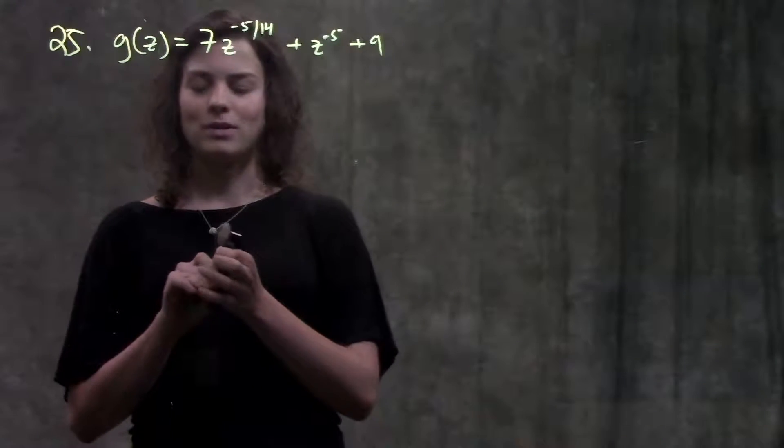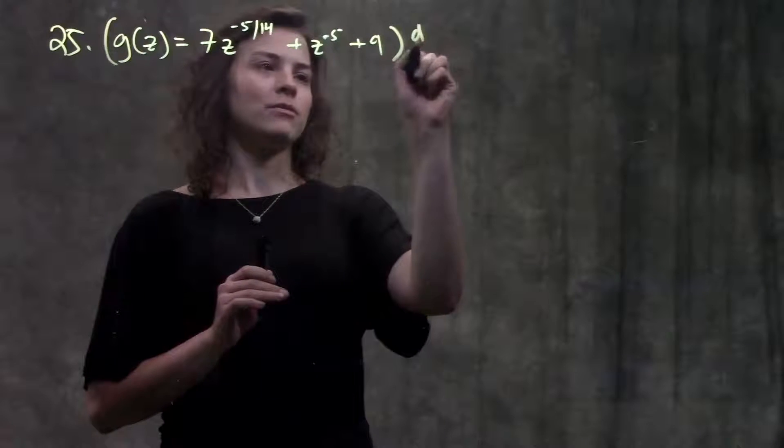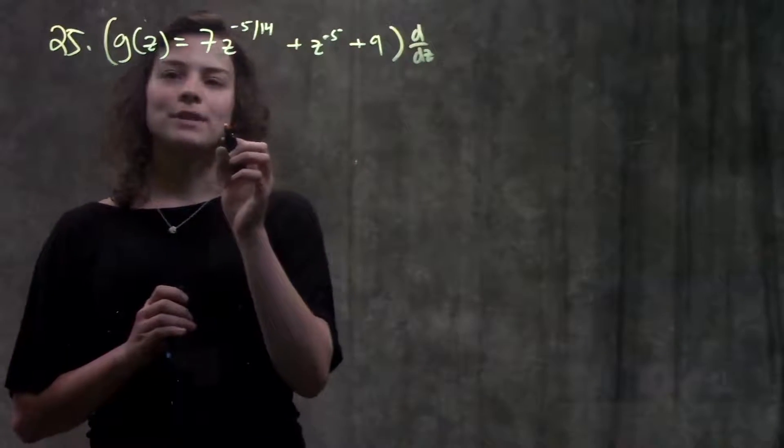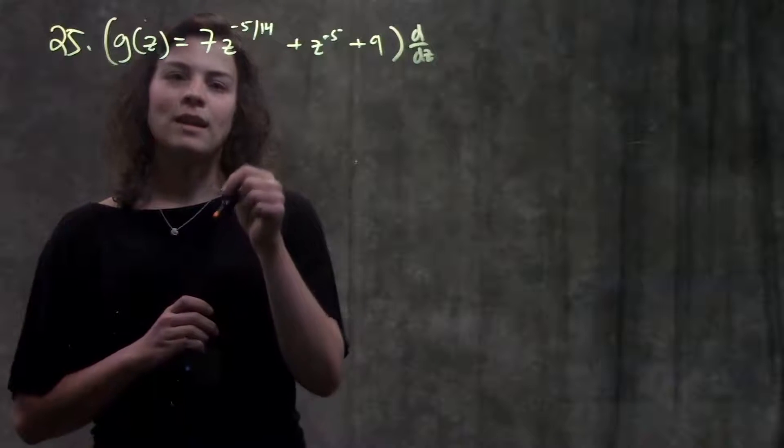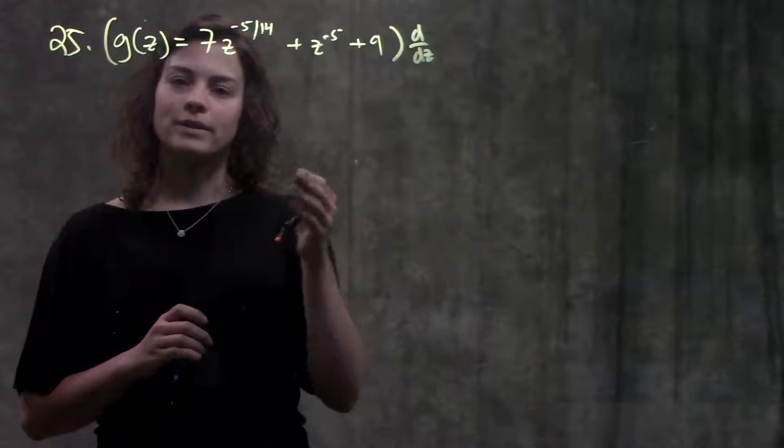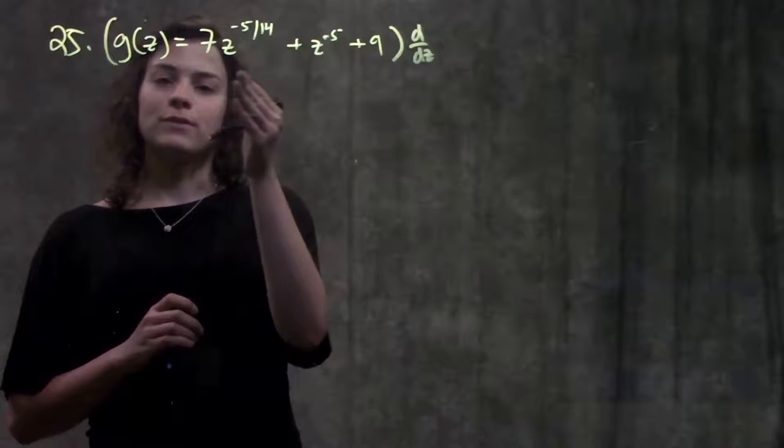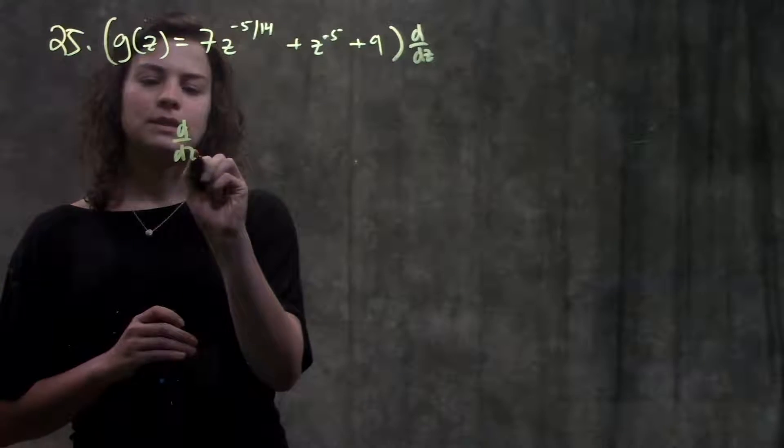So let's go ahead and go through it. We find the derivative, or we can write that d over dz of this function. And in order to do that, I'm going to split it up into three different parts. So I have the derivative of this first part.